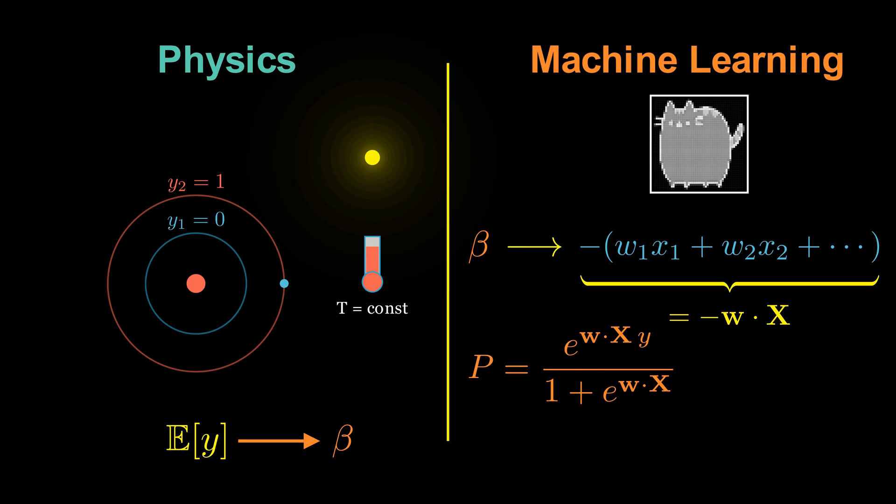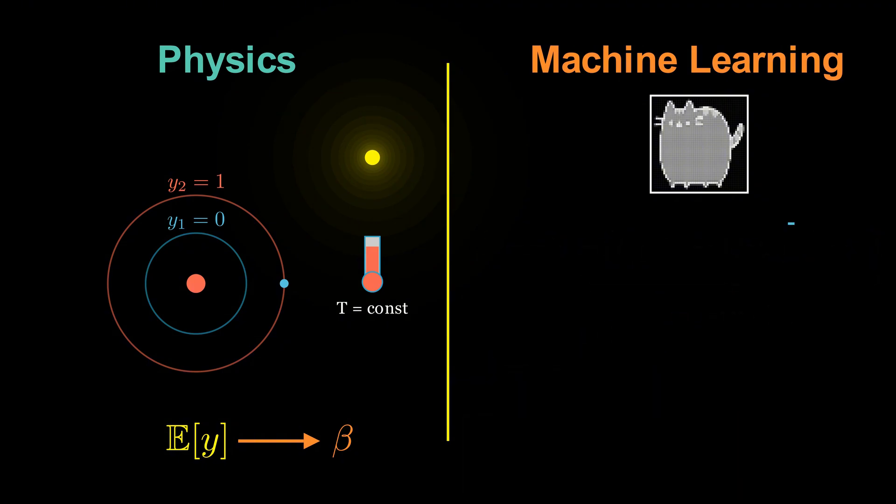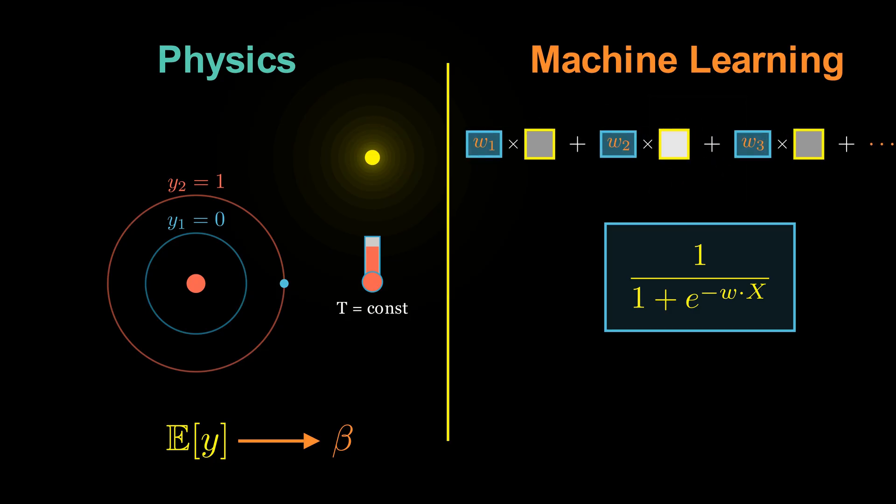And correspondingly, the expected value of Y, the cat or dog classes, becomes the so-called sigmoid function. This equation is the core of logistic regression. The sigmoid function takes the weighted sum of pixel values of an image, squashes it between zero and one. If zero comes out, the prediction is that the image is a cat. If one, the image is a dog.